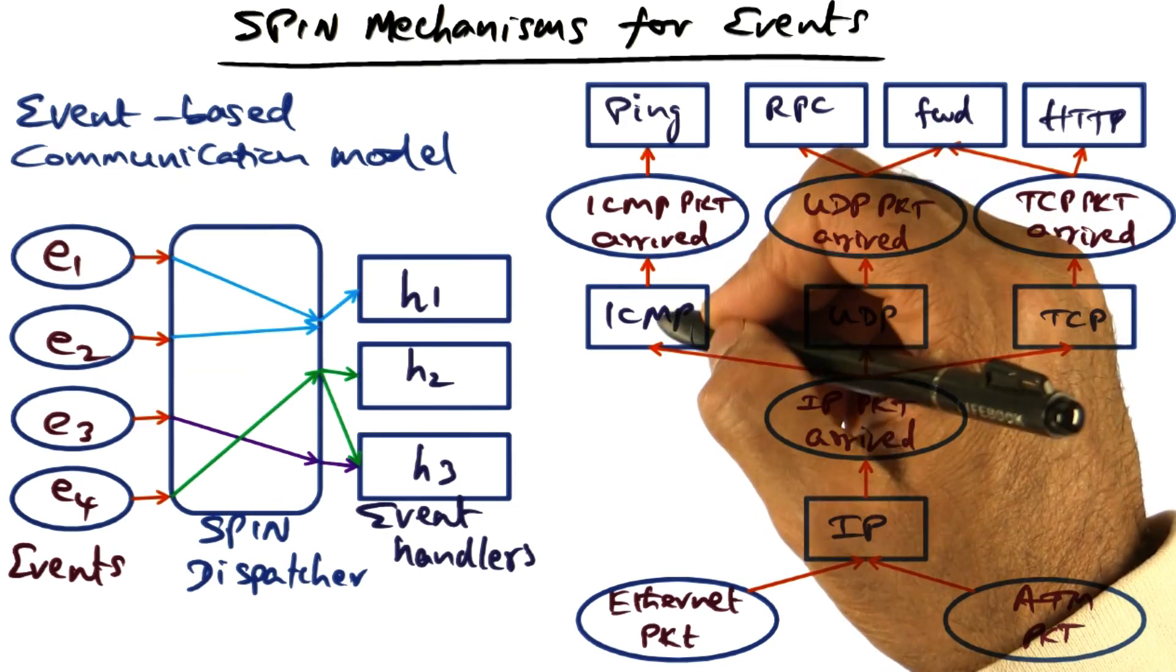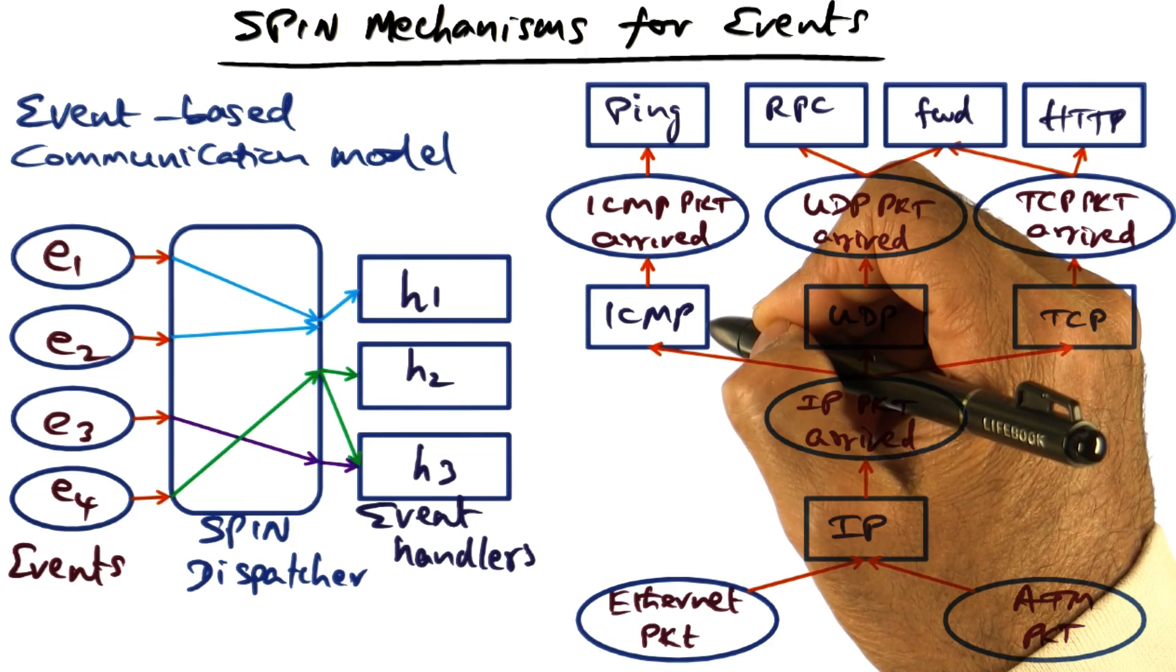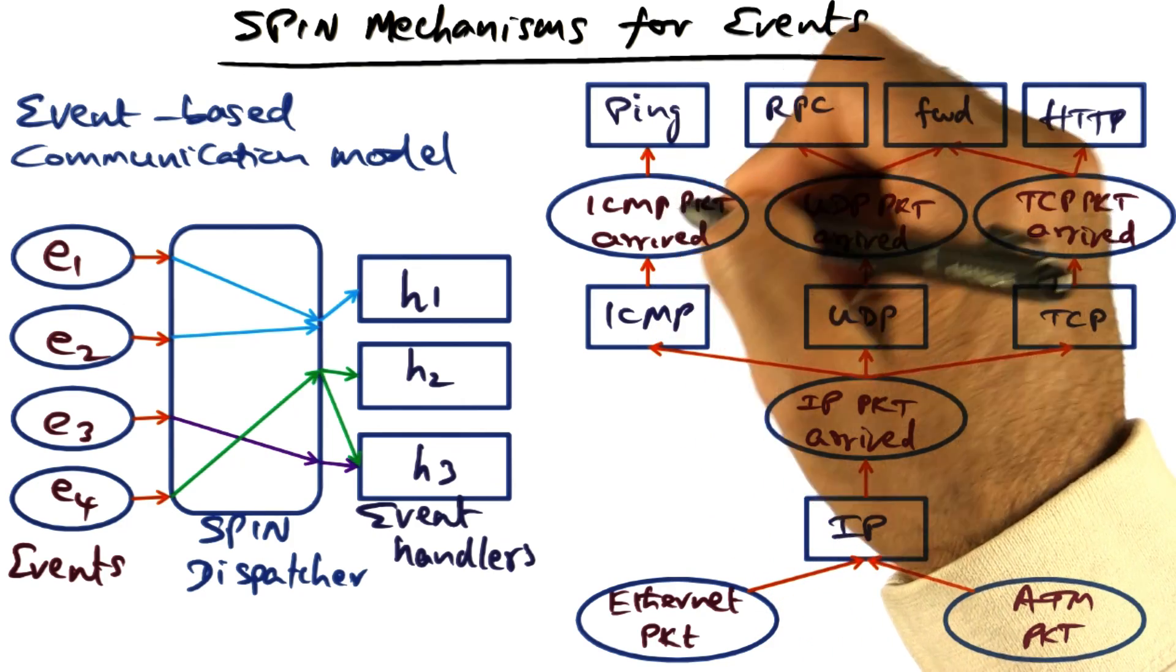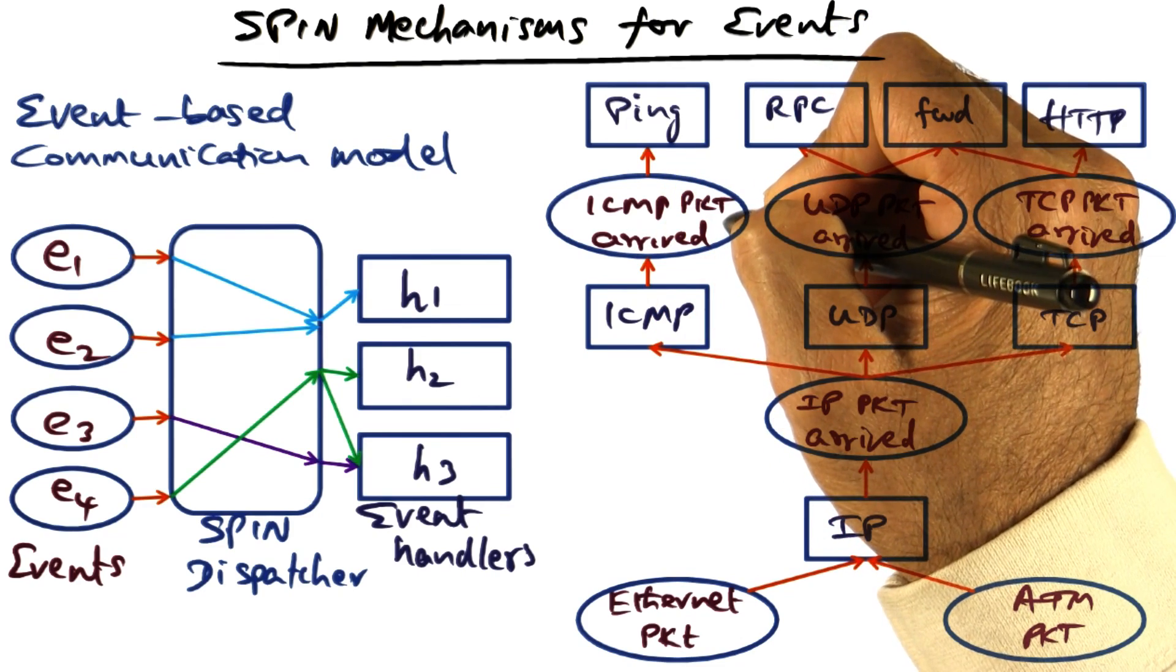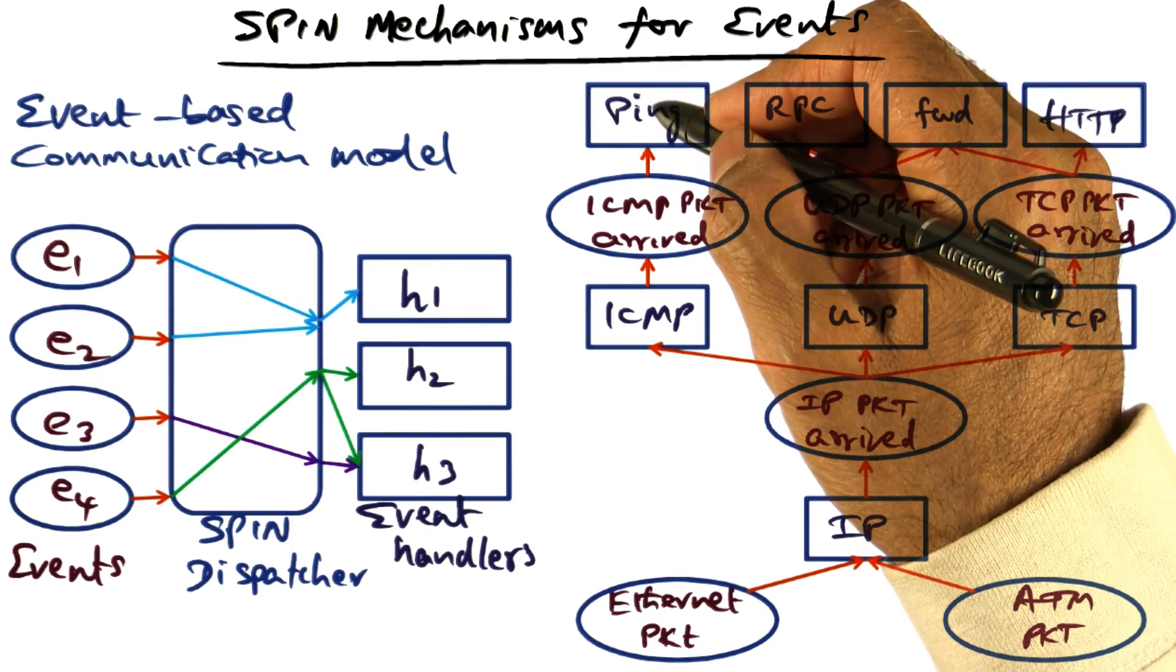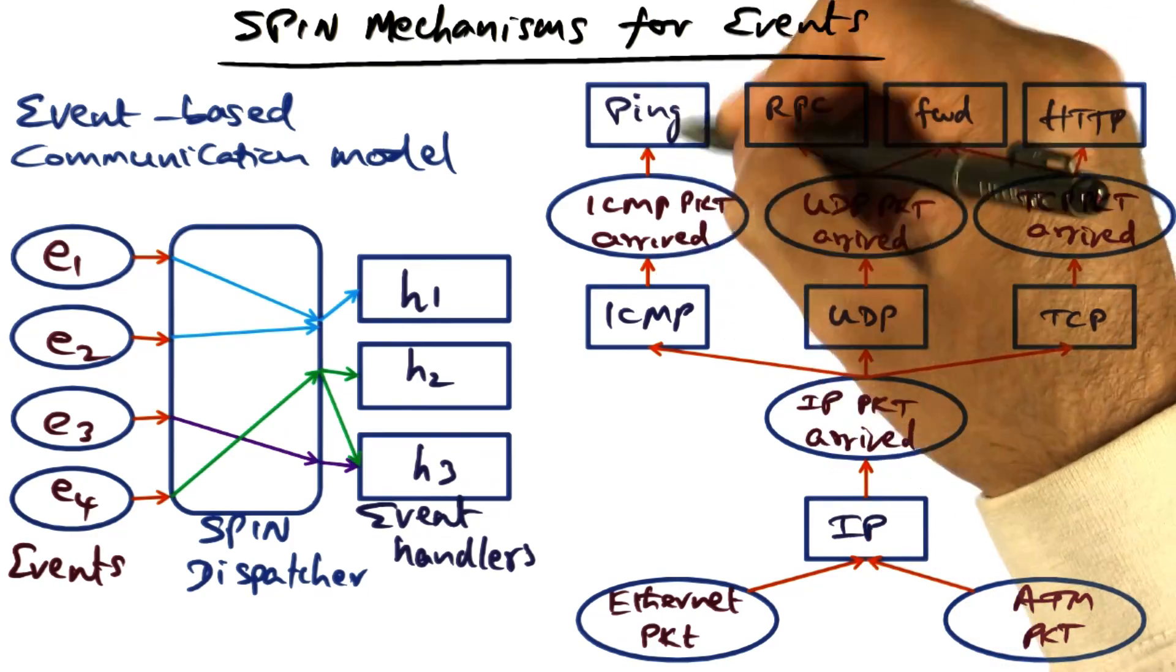Finally, here is an example of one-to-one mapping. If it's an ICMP packet, the ICMP handler processes the IP packet and raises an event that an ICMP packet has arrived. Maybe there is only one client for that particular event, and that may be the ping program. So that's a one-to-one mapping.